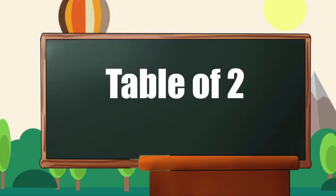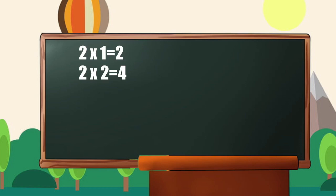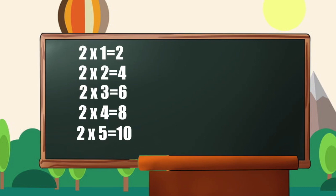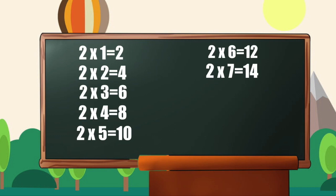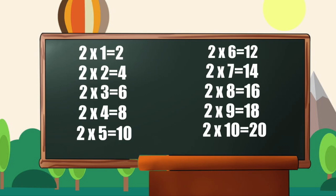Table of 2: 2 1s are 2, 2 2s are 4, 2 3s are 6, 2 4s are 8, 2 5s are 10, 2 6s are 12, 2 7s are 14, 2 8s are 16, 2 9s are 18, 2 10s are 20.